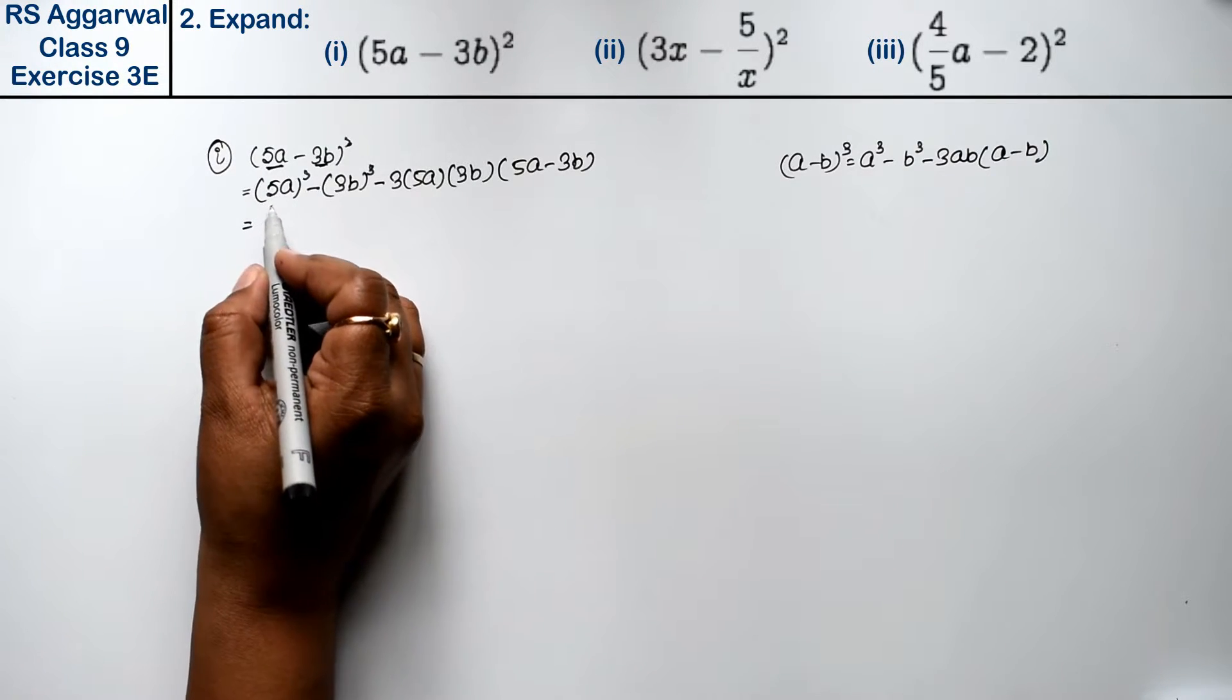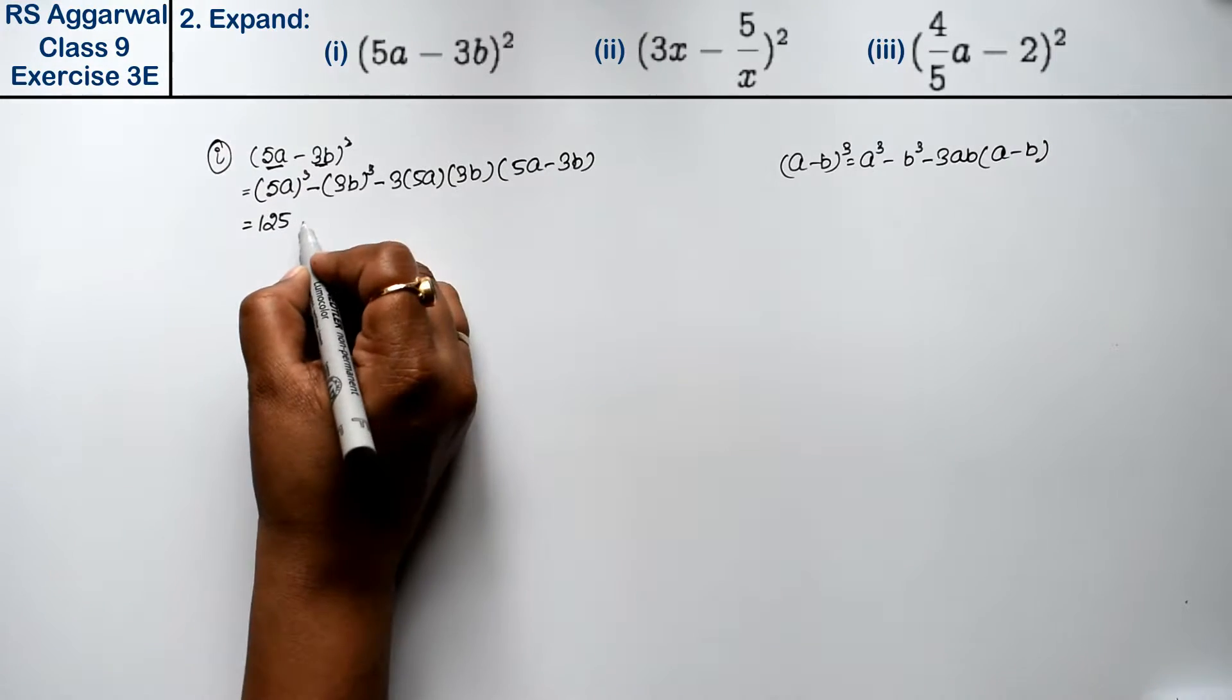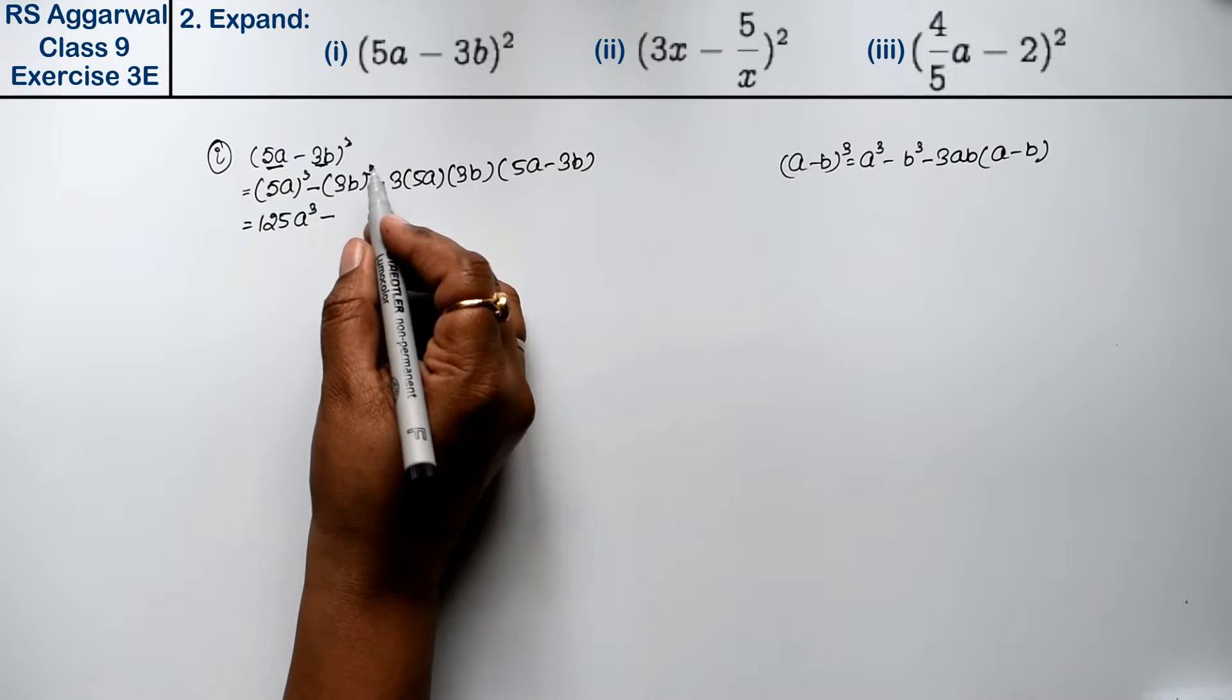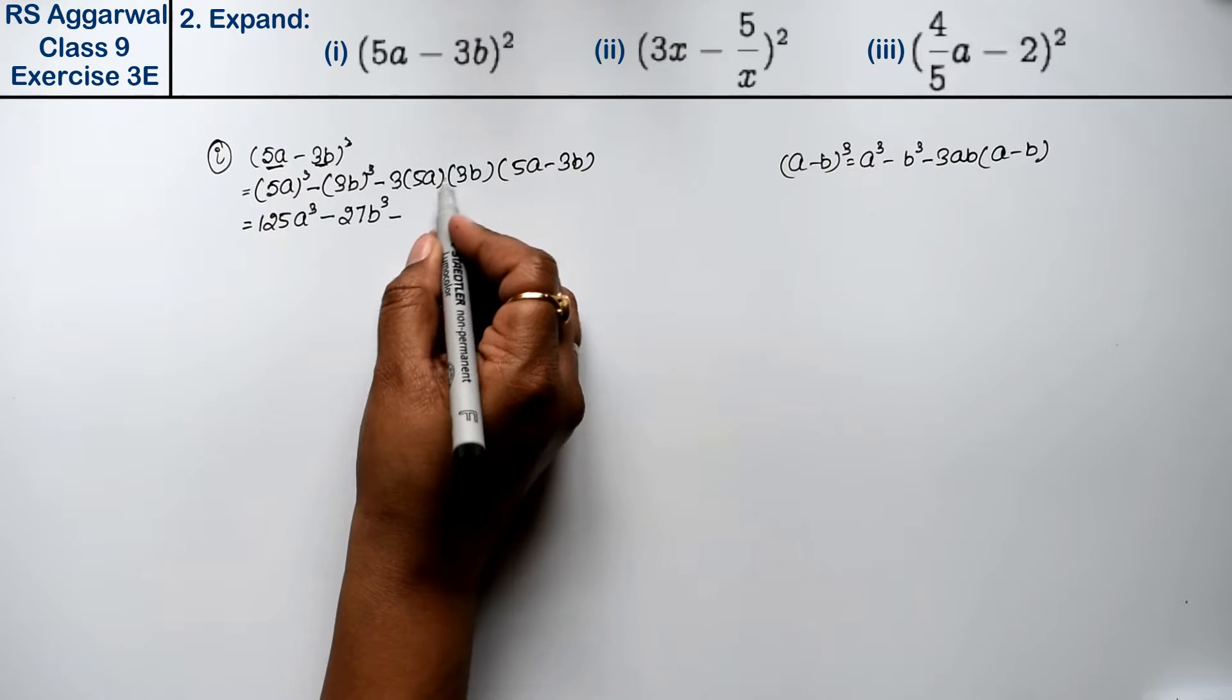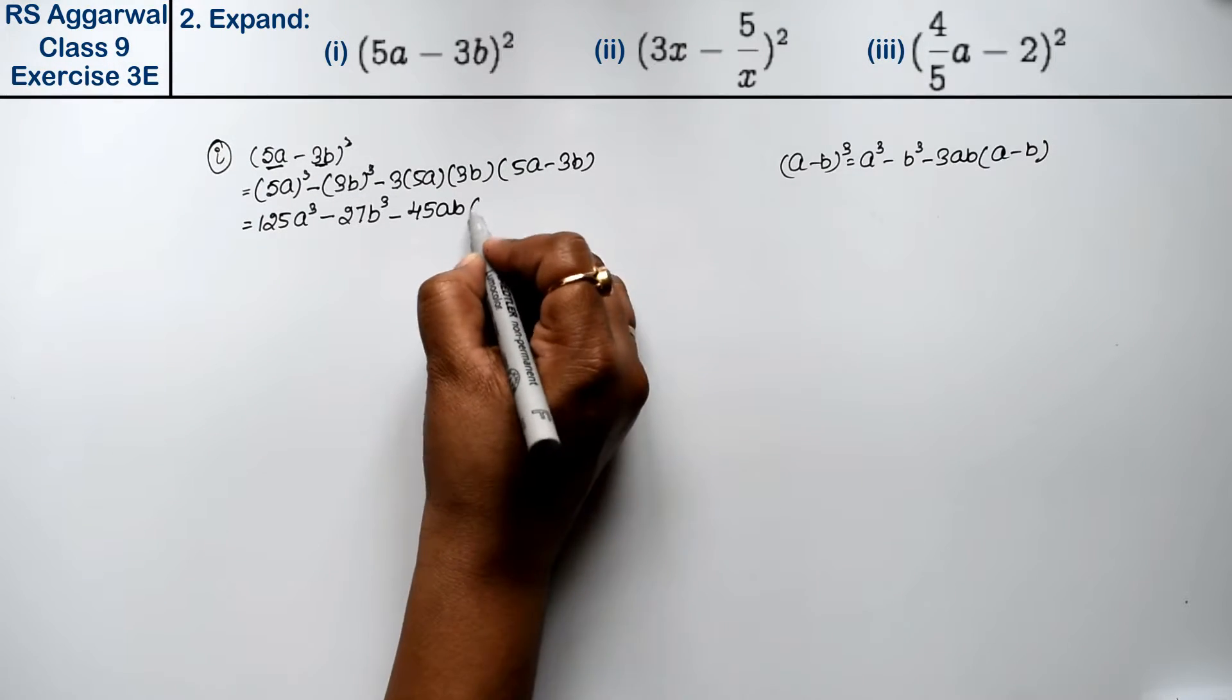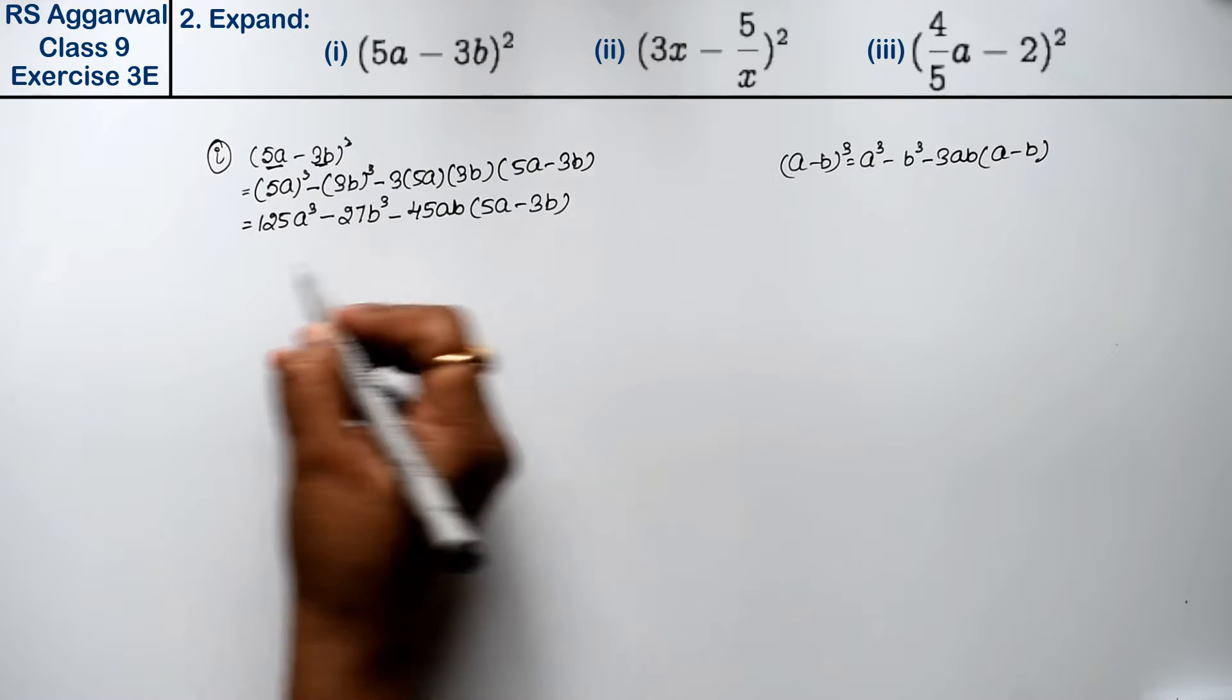Toh 5 ka cube, that is 5×5 is 25, 25×5 is 125a³ minus 3³ is 9, 9×3 is 27b³ minus 3×3 is 9, 9×5 is 45ab into (5a - 3b), right friends.